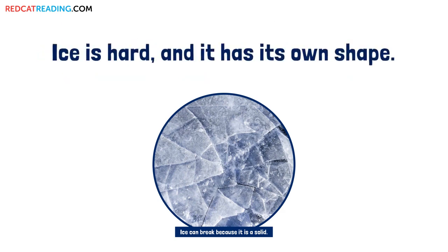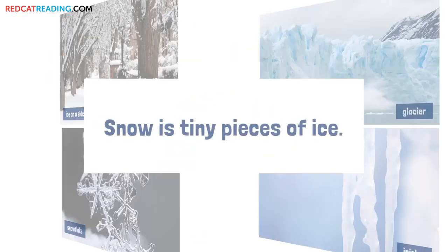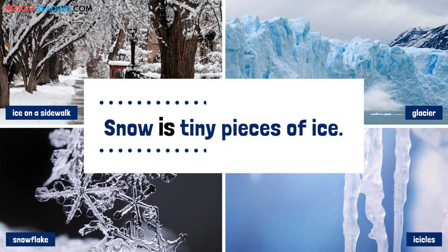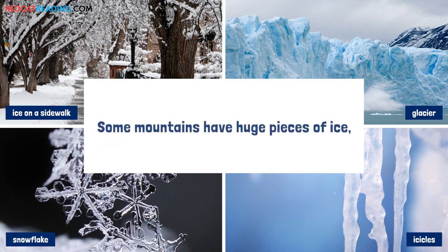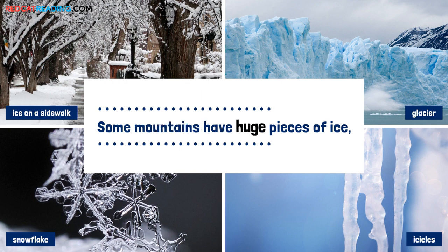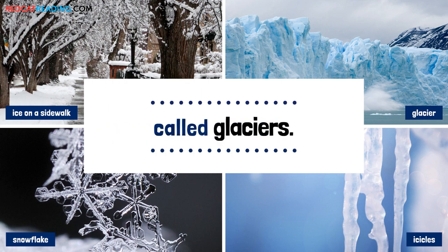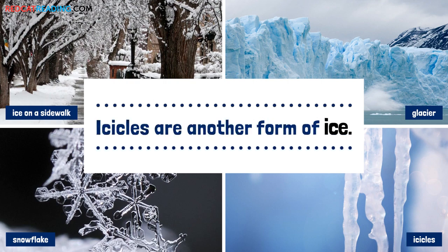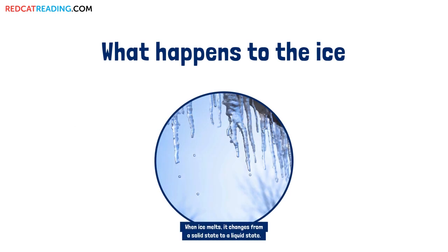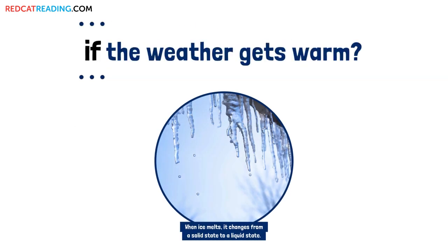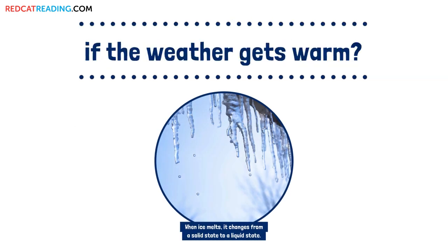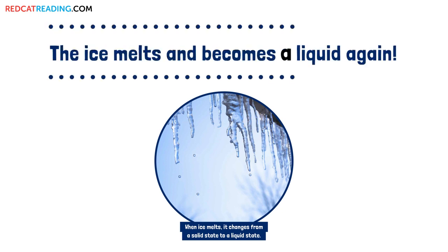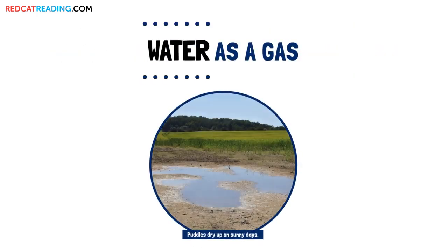The solid state of water is ice. Ice is hard and it has its own shape. Snow — snow is tiny pieces of ice. Some mountains have huge pieces of ice called glaciers. Icicles are another form of ice. What happens to the ice if the weather gets warm? The ice melts and becomes a liquid again.